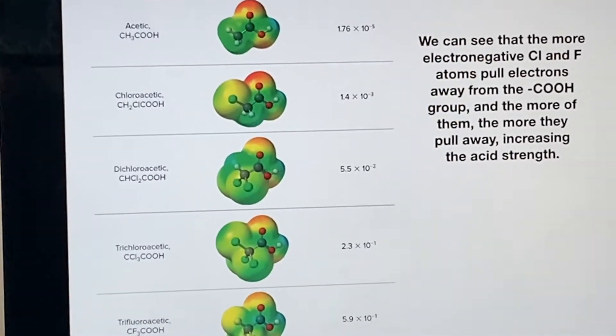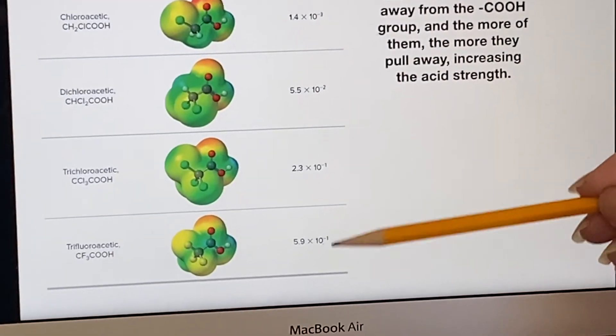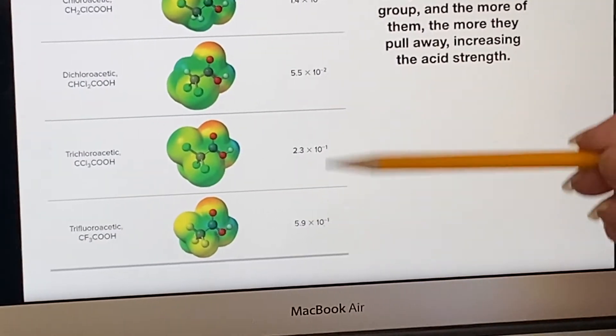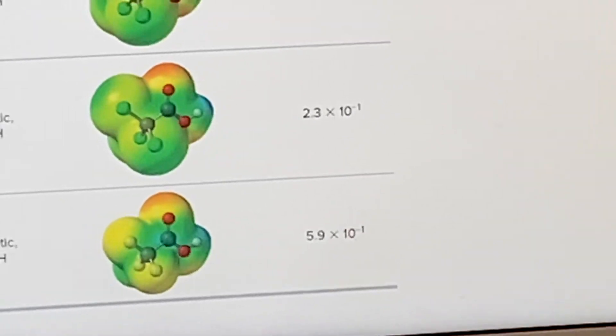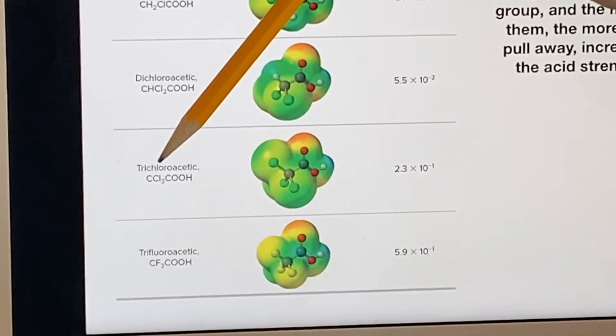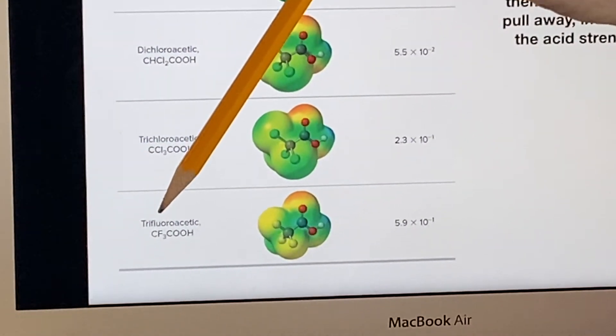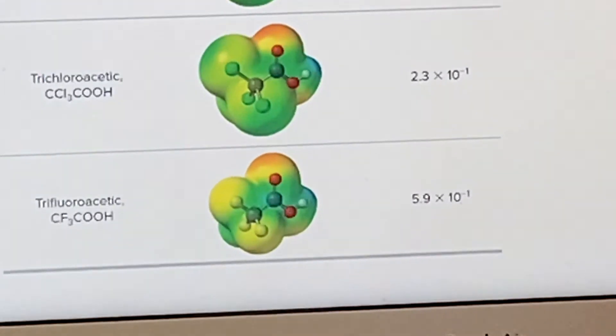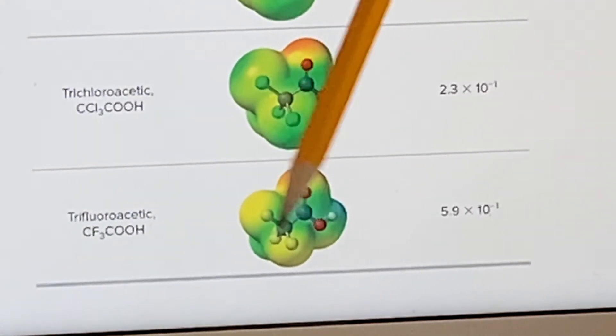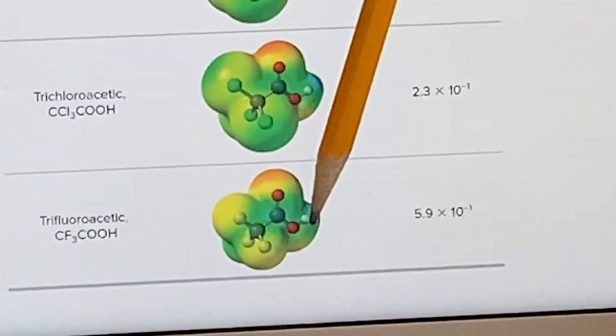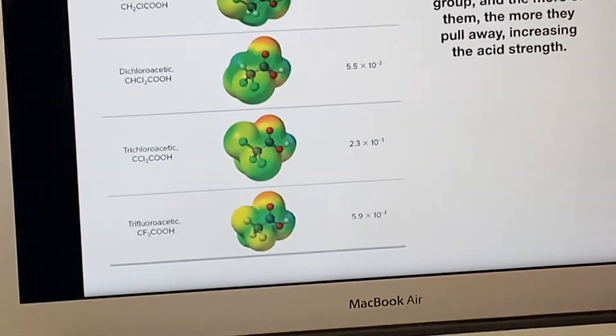Now you can see we do have this is even stronger, not because of 10 to the minus 1—that's the same—but 2.3 increases to 5.9 when we switch from making these chlorines to fluorines. We know fluorine is the most electronegative atom, and so it is pulling electron density away and making it easier for this hydrogen to escape.